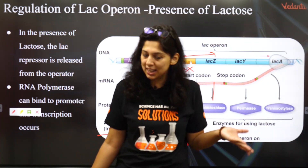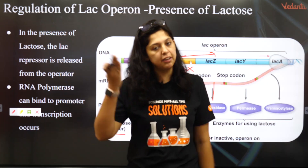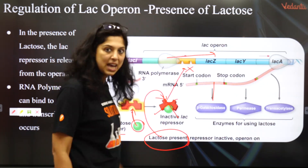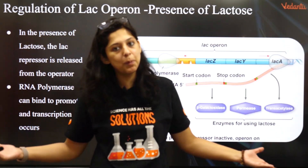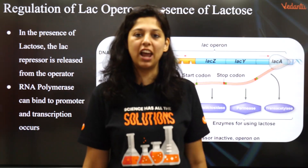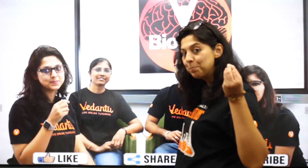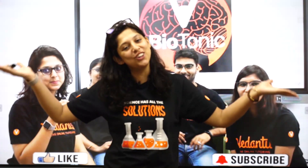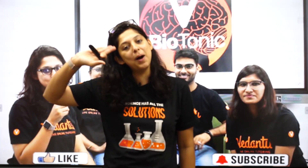So, if lactose is present, repressor is inactive. If lactose is absent, repressor becomes active. This is the very simple explanation of lac operon. With that we come to the end of this amazing two-session Biobomb. If you liked it, please make sure you like, share, and subscribe to our amazing channel. Bye.